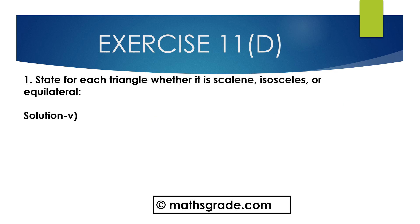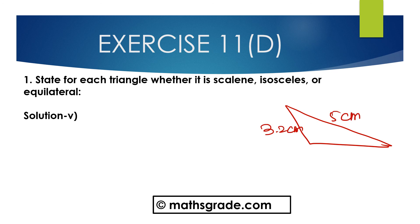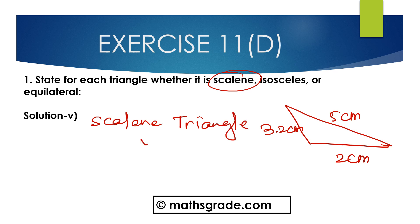Now Question No. 5. First, draw the given triangle. This triangle has sides 5 cm, 3.2 cm, and 2 cm. In this triangle, all three sides are different — 3.2, 5, and 2 are not equal. We know any triangle whose all three sides are different is said to be a scalene triangle. So this is a scalene triangle.